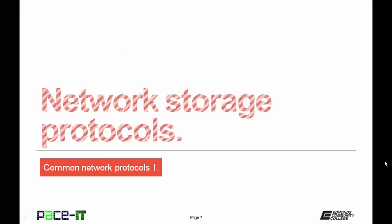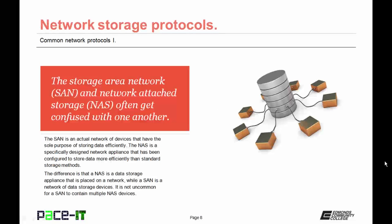Let's move on to network storage protocols. Before we get to the protocols, let's talk about the storage area network and network-attached storage. The SAN and the NAS often get confused with one another, but they are actually very different. The SAN is an actual network of devices that have the sole purpose of storing data efficiently. The NAS is a specifically designed network appliance configured to store data more efficiently than standard storage methods. The key difference is that the NAS is a data storage appliance placed on a network, while the SAN is a network of data storage devices. It's not uncommon for a SAN to contain multiple NAS devices.